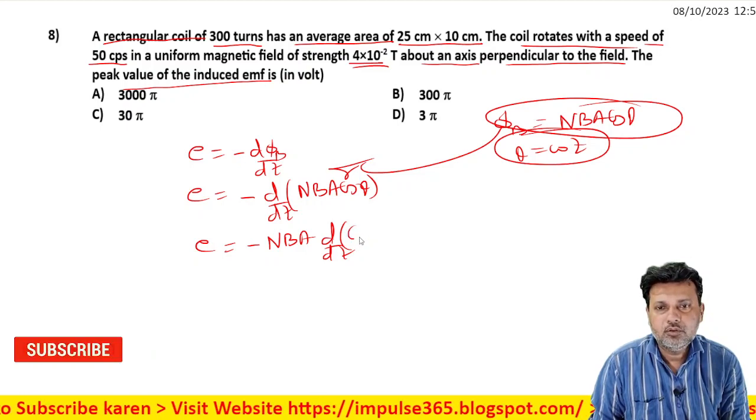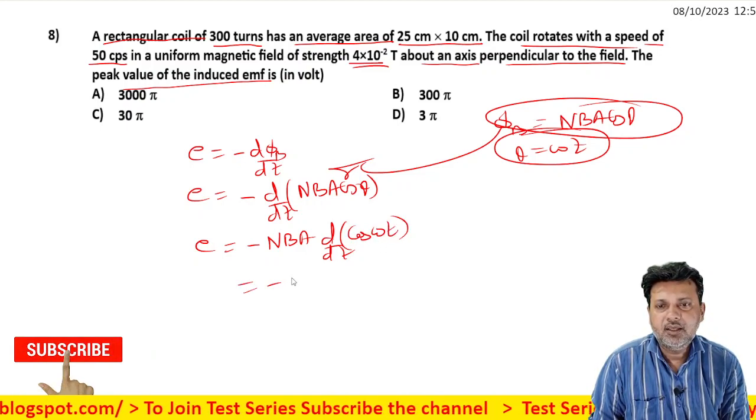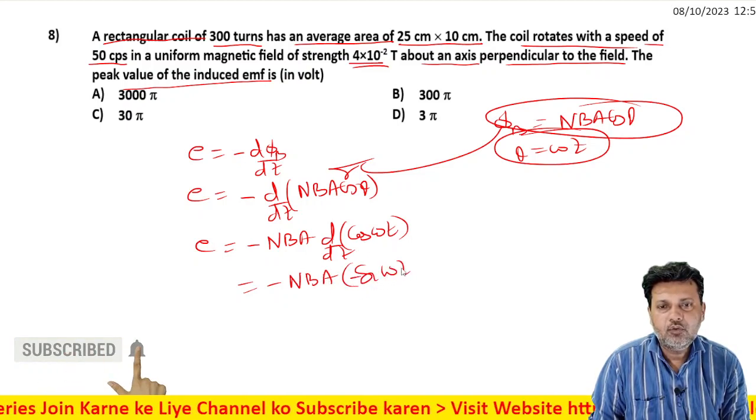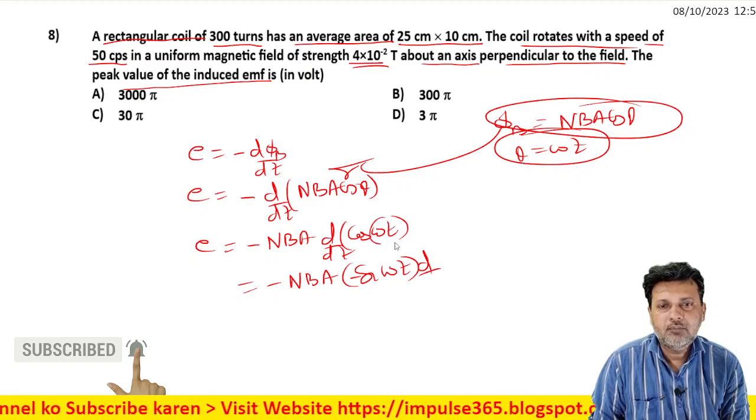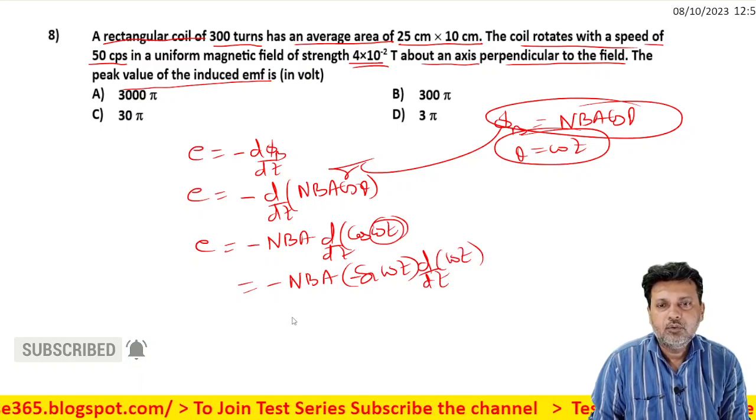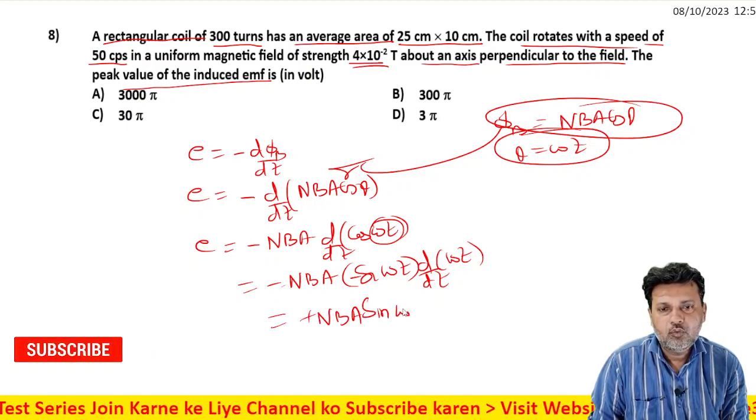Differentiating with respect to time: e = -NBA × d(cosωt)/dt. This gives us e = NBA × sinωt × ω, with minus becoming plus.